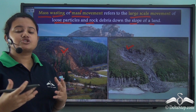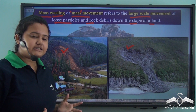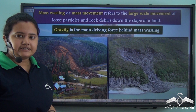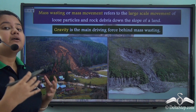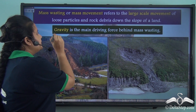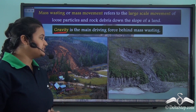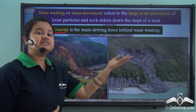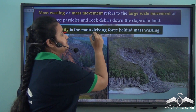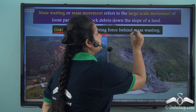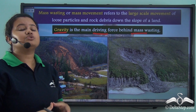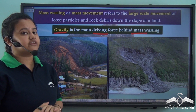What causes these rock particles to move down the slope of a hill? The rock particles and other debris move down the slope of a hill under the influence of gravity. In other words, gravity pulls these materials downwards, therefore gravity is the main driving force behind mass wasting, or in other words mass wasting is caused due to gravitational pull of the earth.